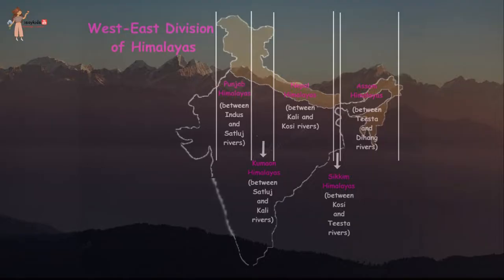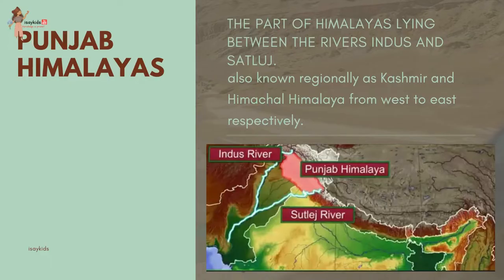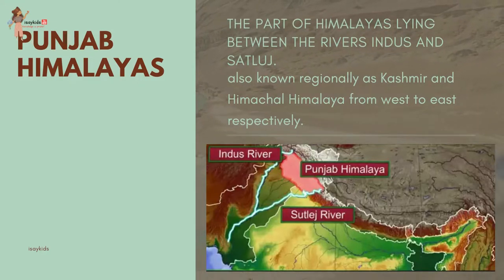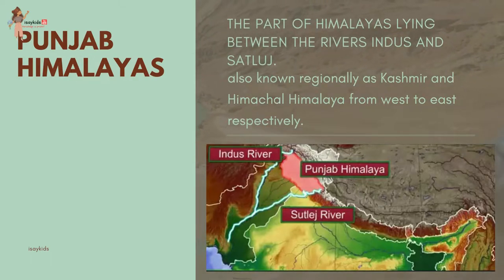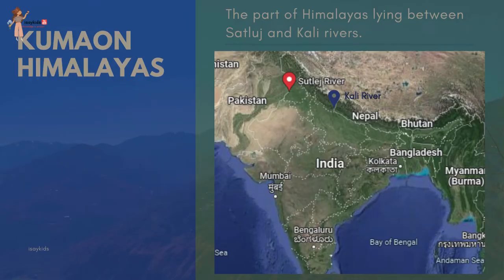Besides the longitudinal divisions, the Himalayas have also been divided on the basis of regions from west to east, demarcated by river valleys. The part of the Himalayas lying between the Indus and Sutlej has been traditionally known as Punjab Himalaya, also known regionally as Kashmir and Himachal Himalaya from west to east respectively. The part lying between the Sutlej and Kali rivers is known as Kumaon Himalayas.